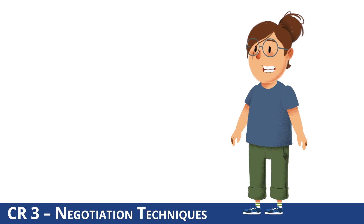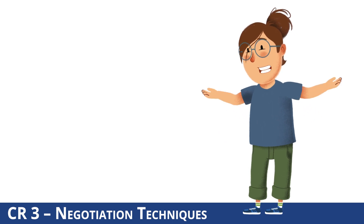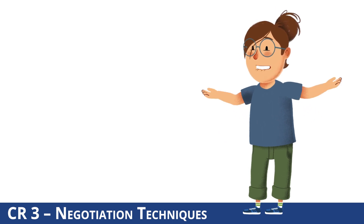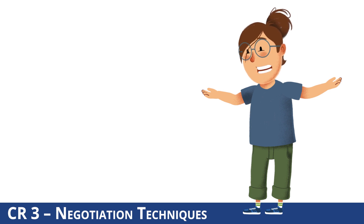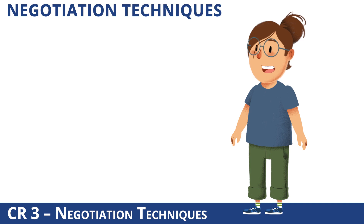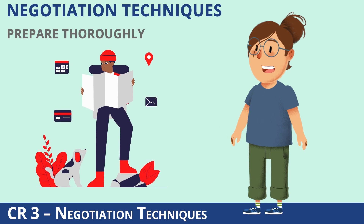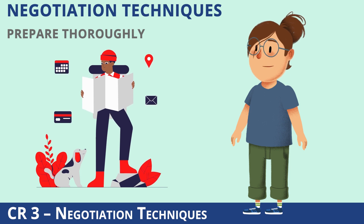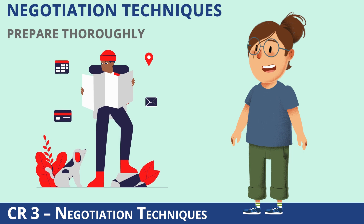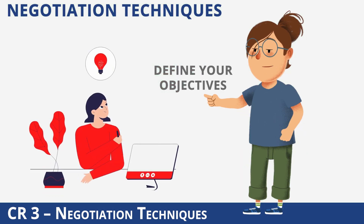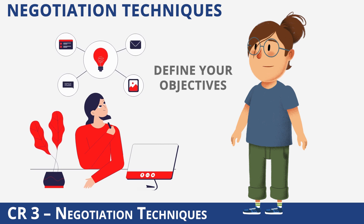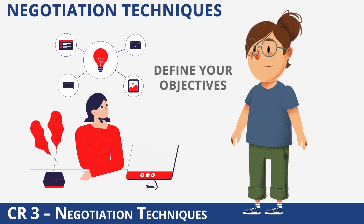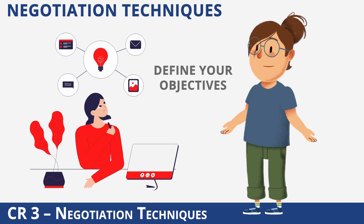Negotiation strategies can help practitioners achieve successful outcomes that are mutually beneficial. By understanding different negotiation techniques, parties can choose the most appropriate strategy for their situation and increase the likelihood of achieving their goals. Strong negotiation techniques can include, but not be limited to: prepare thoroughly — before entering into negotiations, make sure you have all of the necessary information about the other party, their interests, and their bargaining power, which will enable you to understand their position and leverage your strengths. Define your objectives — clearly define your objectives and understand what you want to achieve from the negotiation, which will help you stay focused and avoid getting sidetracked by irrelevant issues.